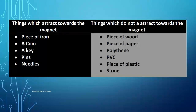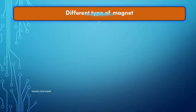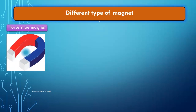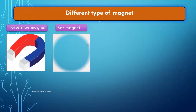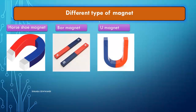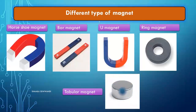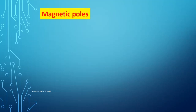Different types of magnets: in Grade 6 we learned five types of magnets. First, horseshoe magnet; second, bar magnet; third, U-magnet; fourth, ring magnet; and fifth, tubular magnet. The two ends where the power of attraction is more are called the magnetic poles.